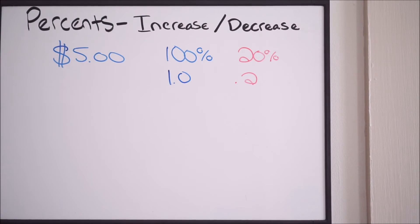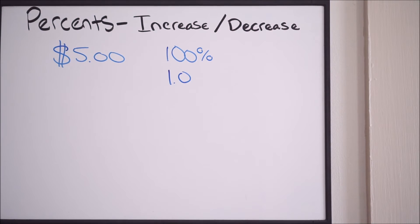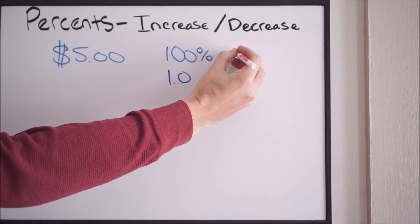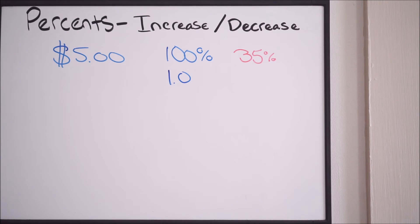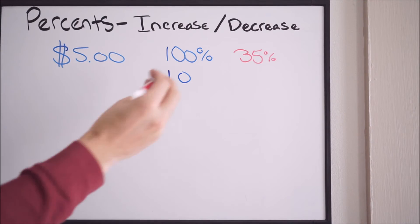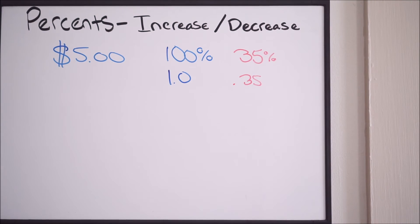We're going to use our base here of 100% again. Let's say you wanted to do a 35% decrease — a 35% decrease, or the item is on sale at 35% off. So I'm going to write 35% here. As a decimal, we move the decimal point over two places to the left, so this is 0.35. Now instead of adding, since we're talking about a decrease, you're simply going to subtract: 1.0 minus 0.35.